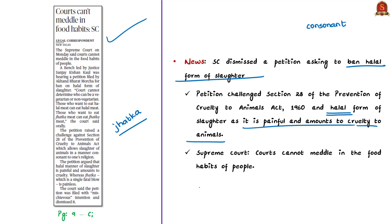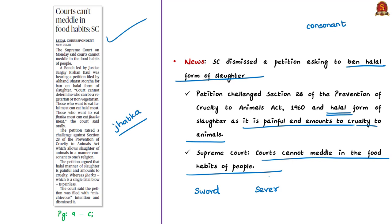On the other hand, the Jhatka method involves killing the animal instantaneously by a single stroke of a sword or axe to cut the head. The Supreme Court observed that courts cannot meddle in the food habits of people. The court said it cannot determine who can be vegetarian or non-vegetarian — those who want to eat halal meat can eat halal meat and those who want Jhatka meat can eat Jhatka meat. The apex court dismissed the petition, saying it was filed with mischievous intention.